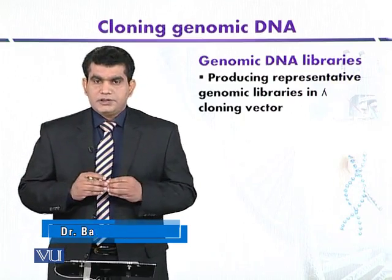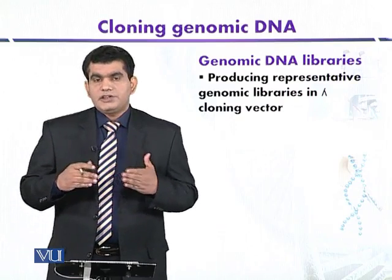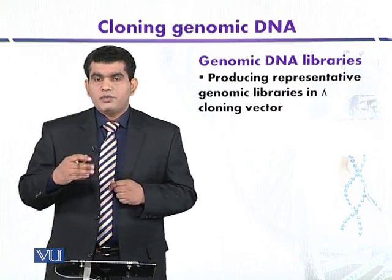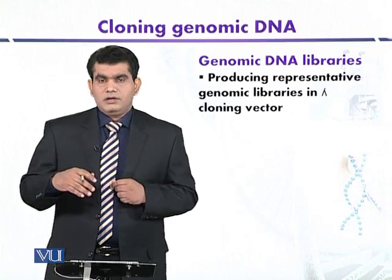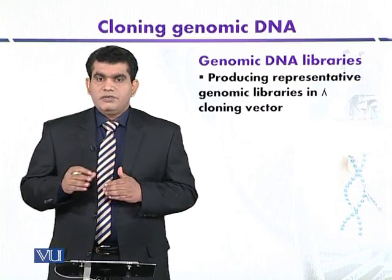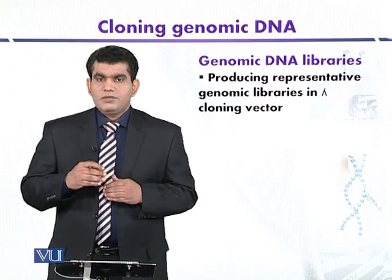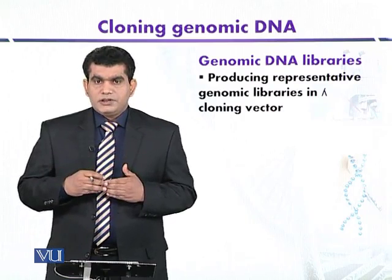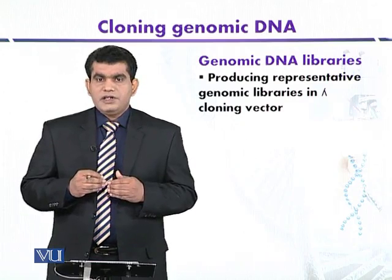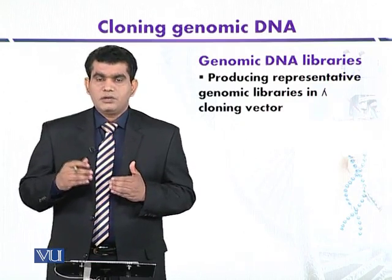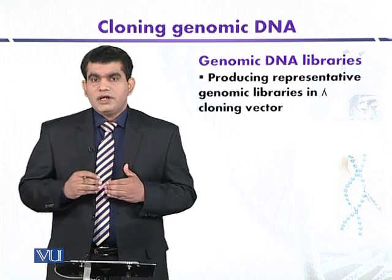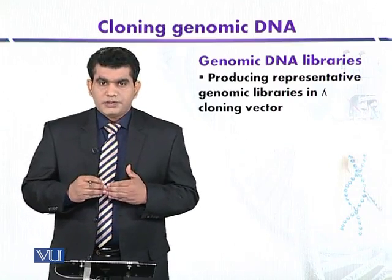For example, if we use a restriction enzyme like EcoRI, it will produce DNA fragments of approximately four kilobase. These four kilobase DNA fragments are ligated with bacteriophage lambda. To generate a human genomic library, approximately 7×10⁵ recombinant clones are required, which is a huge number, and screening this human library is a laborious process.